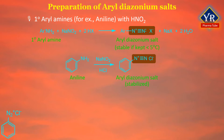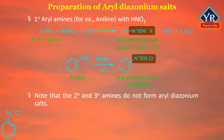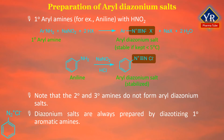Diazotization of a primary amine takes place through a series of steps. In the presence of a strong acid, nitrous acid dissociates to produce nitroso ions. These ions react with the nitrogen of the amine to form an unstable N-nitroso aminium ion as an intermediate. This intermediate loses a proton to form an N-nitroso amine, which then tautomerizes to a diazohydroxide in a reaction similar to keto-enol tautomerism.